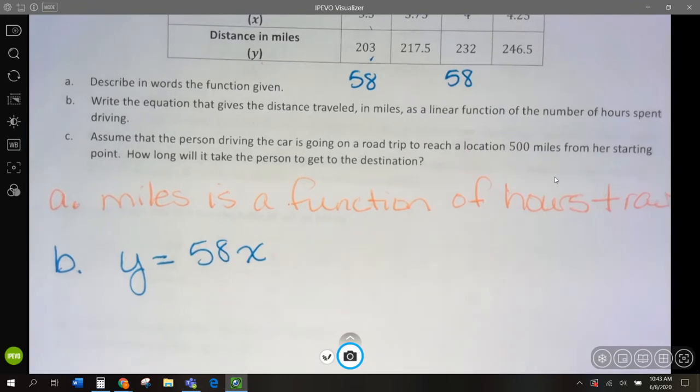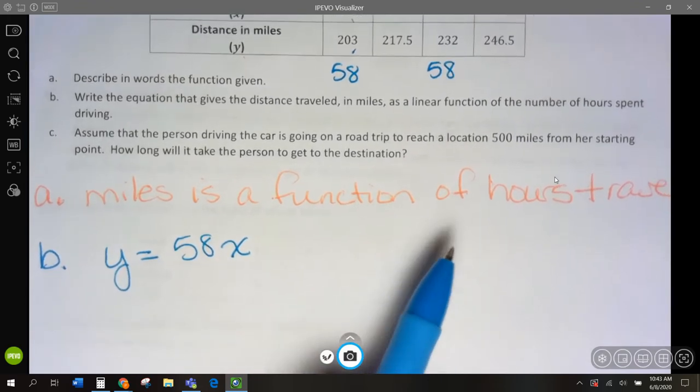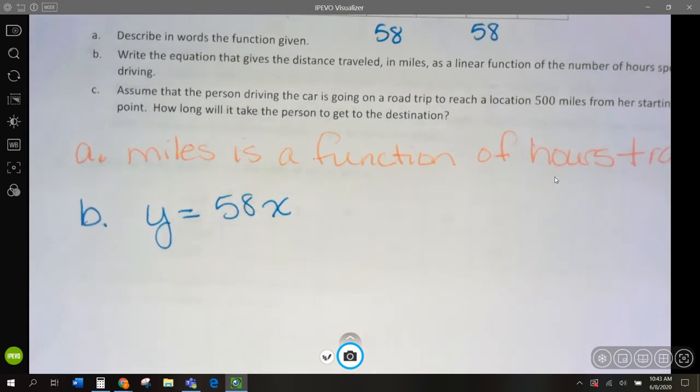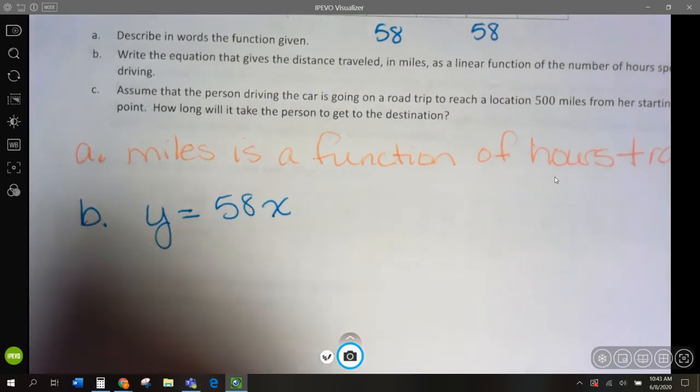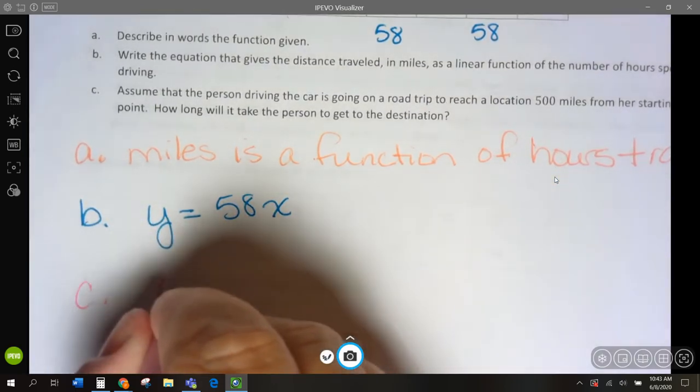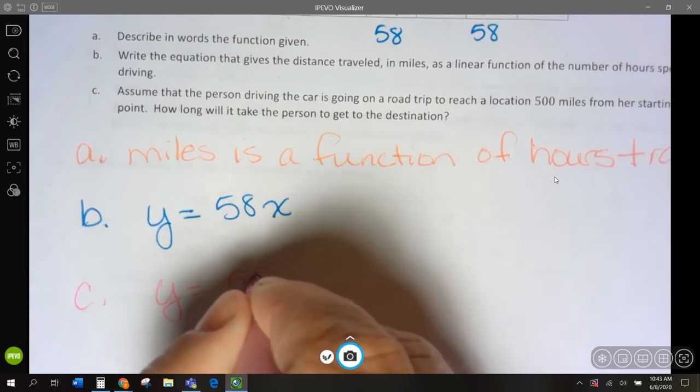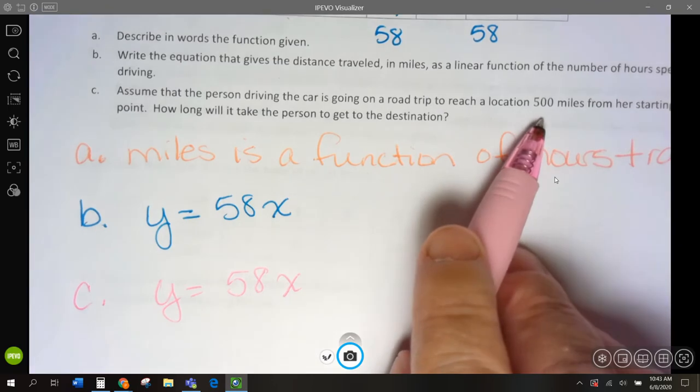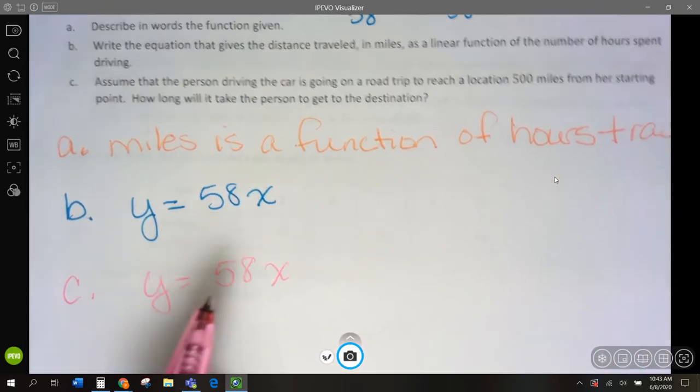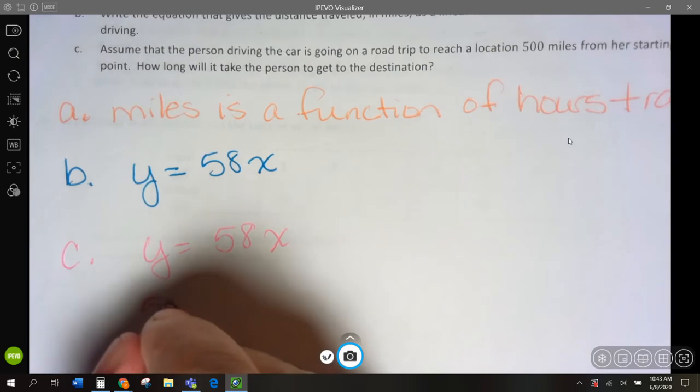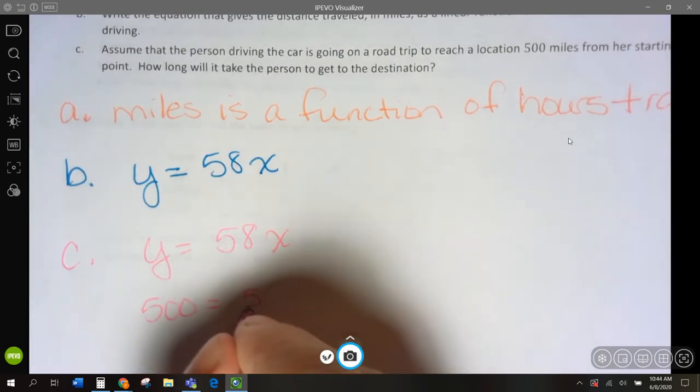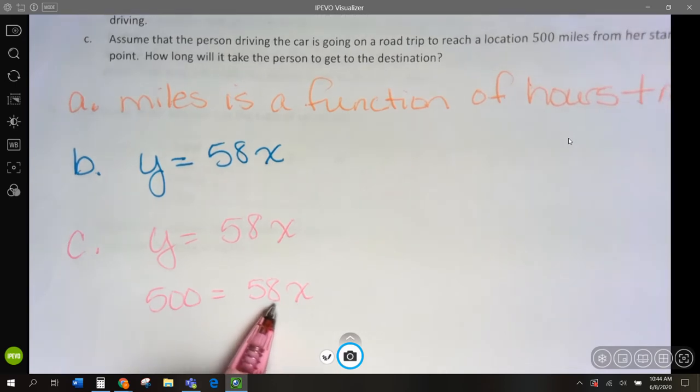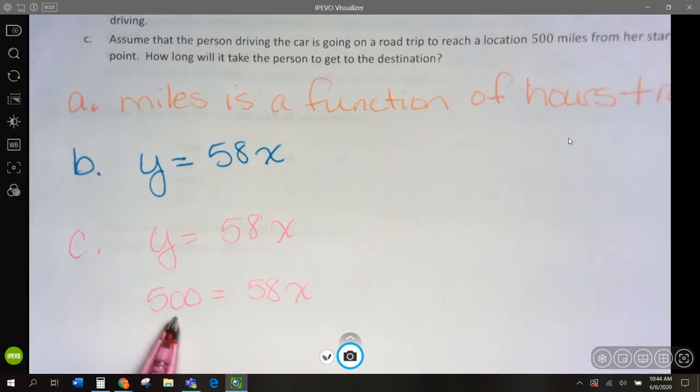Third one, assume that the person driving the car is going on a road trip to reach a location 500 miles away from the start. How long will it take for the person to get to their destination? So, for C, if we have y equals 58x, and we know that their total miles is 500, that's going to have to go in for y.